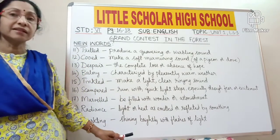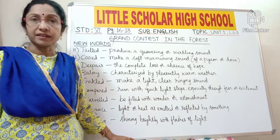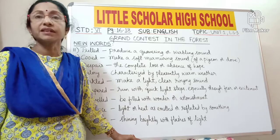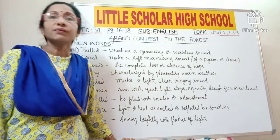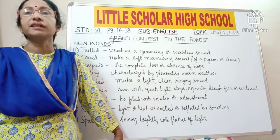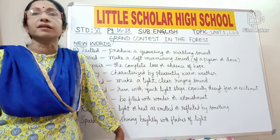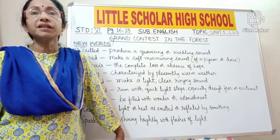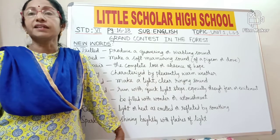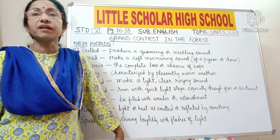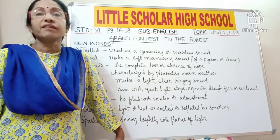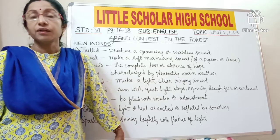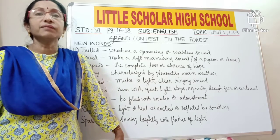Now let us proceed to the lesson, Grand Contest in the Forest. It is a very interesting lesson, kids. It is specially about the birds, animals and the trees. It was a day of the contest among the creatures of the forest — a day of competition among the animals of the forest. The animals, birds and trees were very excited and began to prepare for the great day, waiting for the competition to give their best to the great one, except the little grey squirrel.